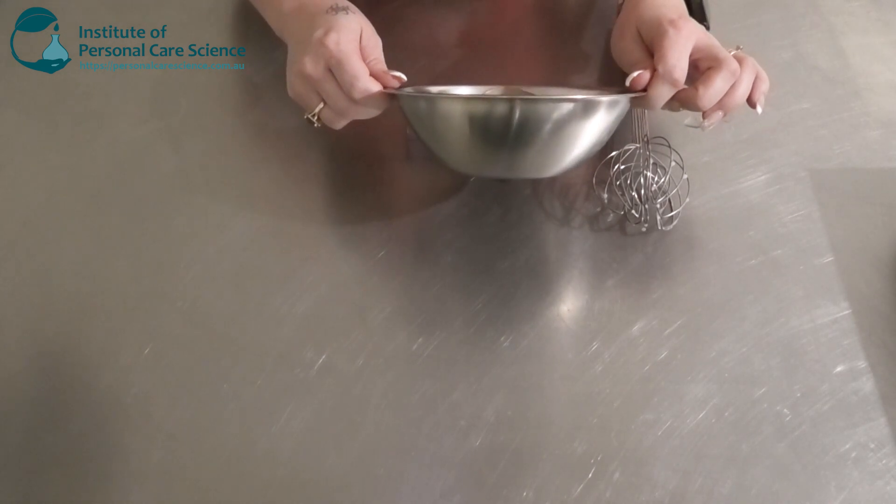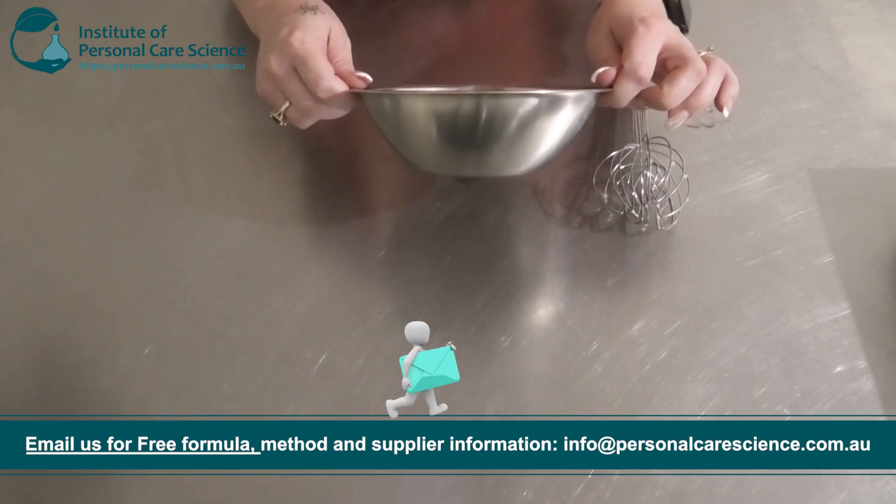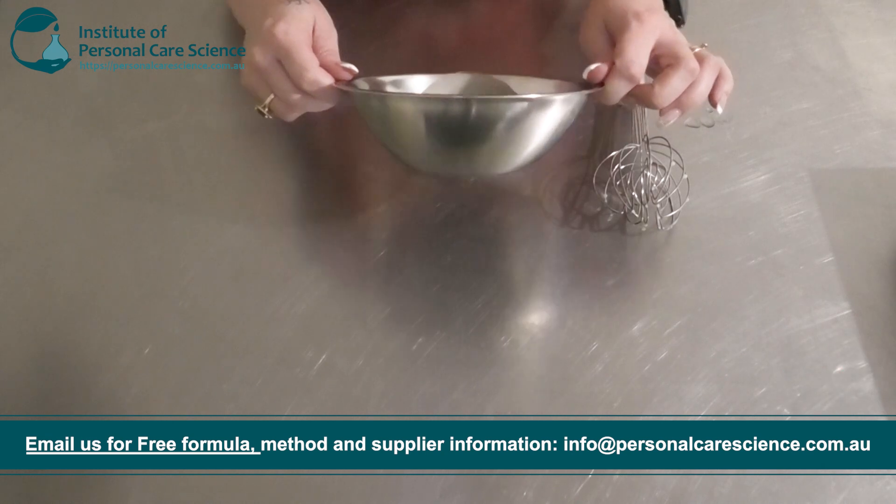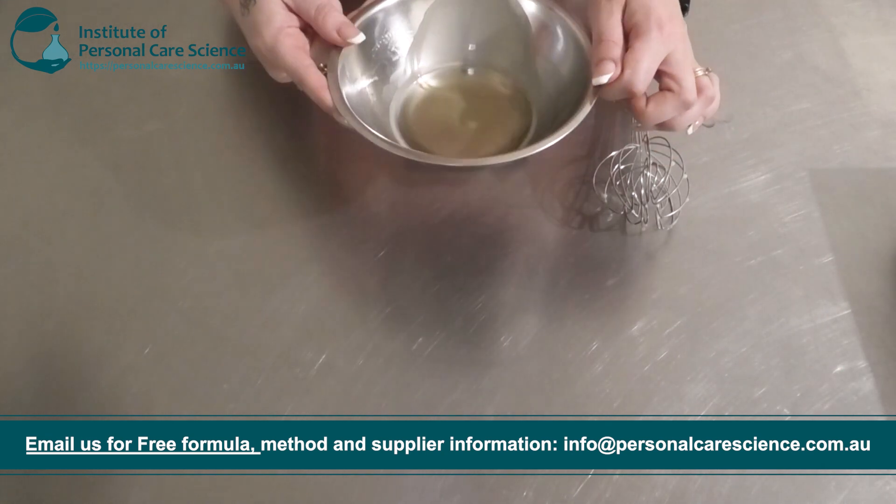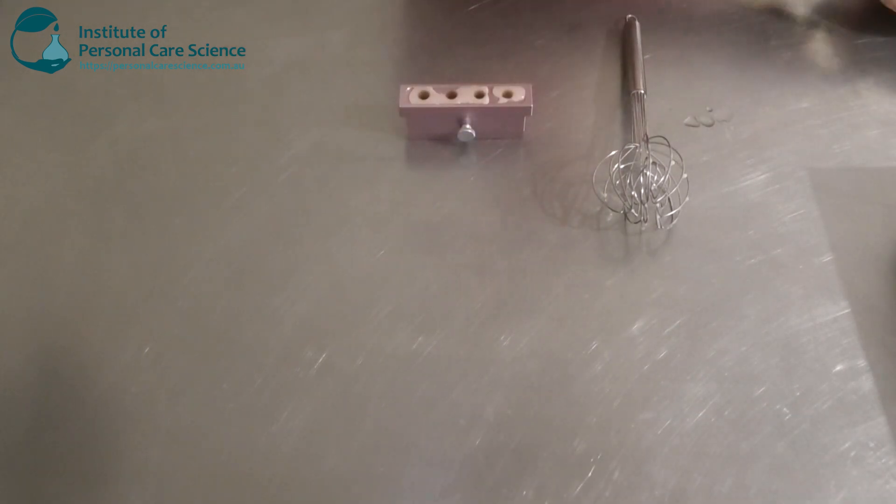You can also use lip balm molds, the twist up ones, the tubes, and you can also use the twist up deodorant tubes as well. They are a great choice for this type of product. So now we're just going to let that set and we will come back tomorrow and have a look.